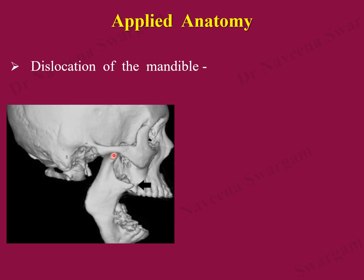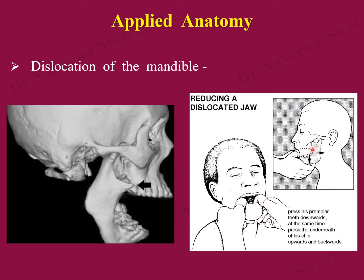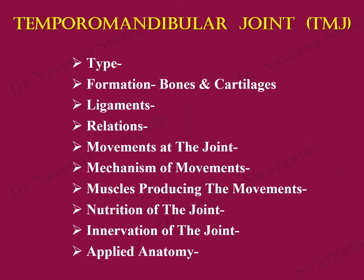Applied anatomy — dislocation of the mandible: it takes place only in one direction, where the head of the mandible moves forward beyond the articular tubercle into the infratemporal fossa. This happens during wide opening of the mouth, as in yawning. It can be reduced manually by applying downward traction on the ramus of the mandible by putting fingers against the premolar teeth while simultaneously lifting the chin, so that the head of the mandible slides back into the mandibular fossa.